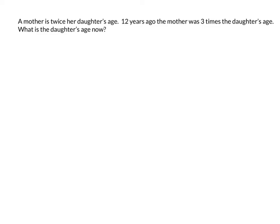I like to first highlight what's important. So the mother is twice her daughter's age — that would be now. Then we've got twelve years ago, the mother was three times the daughter's age, and the question says: what is the daughter's age now?